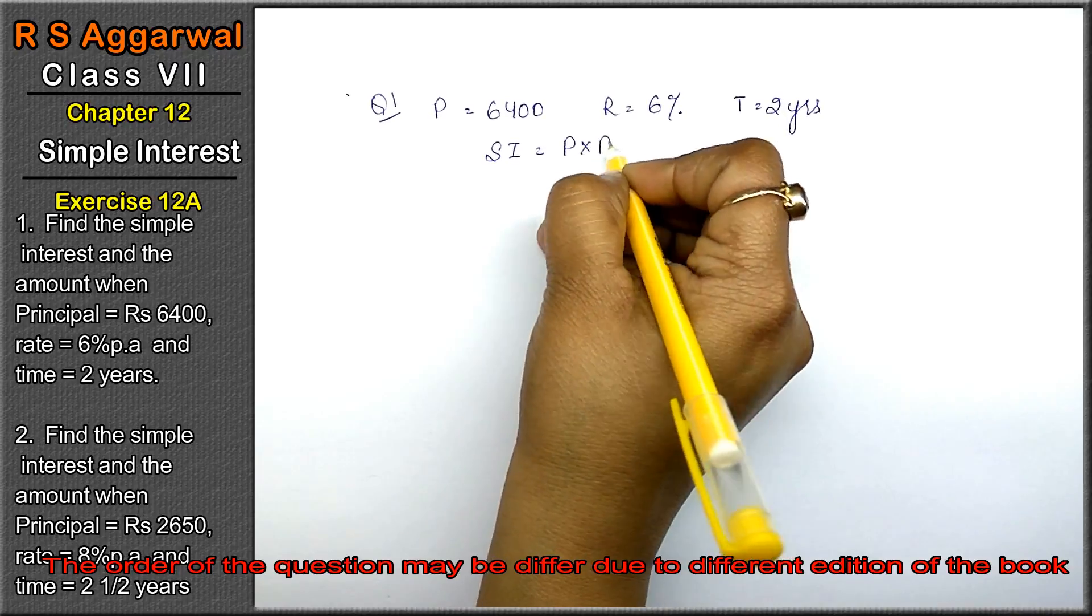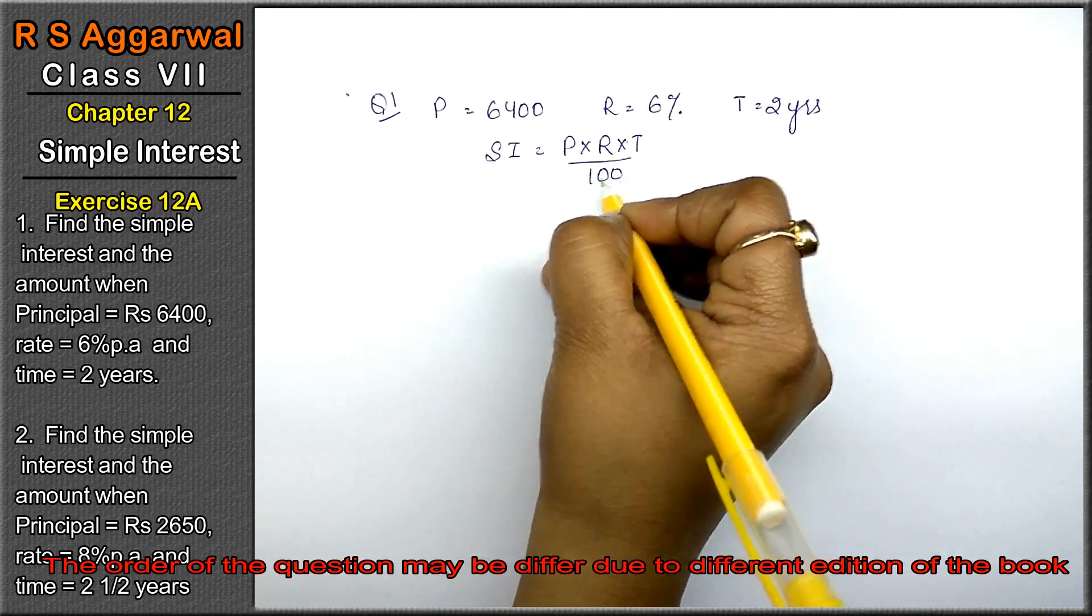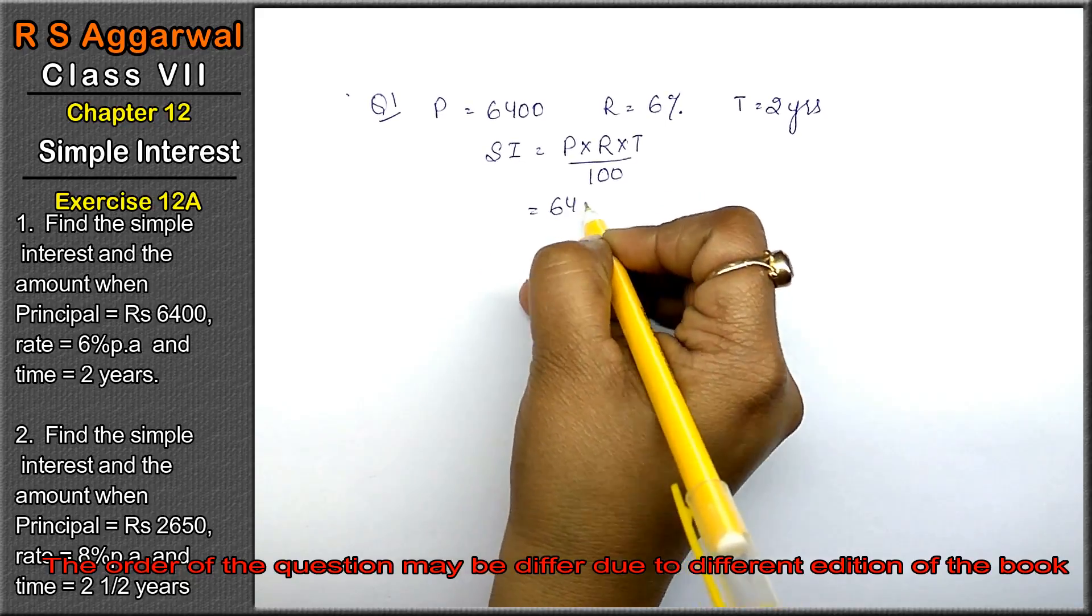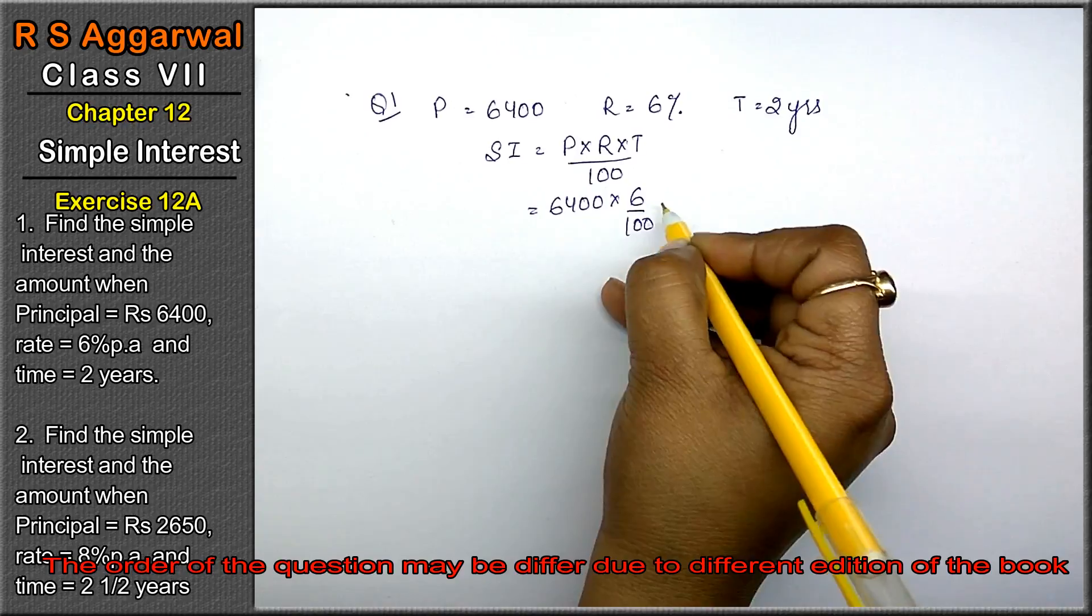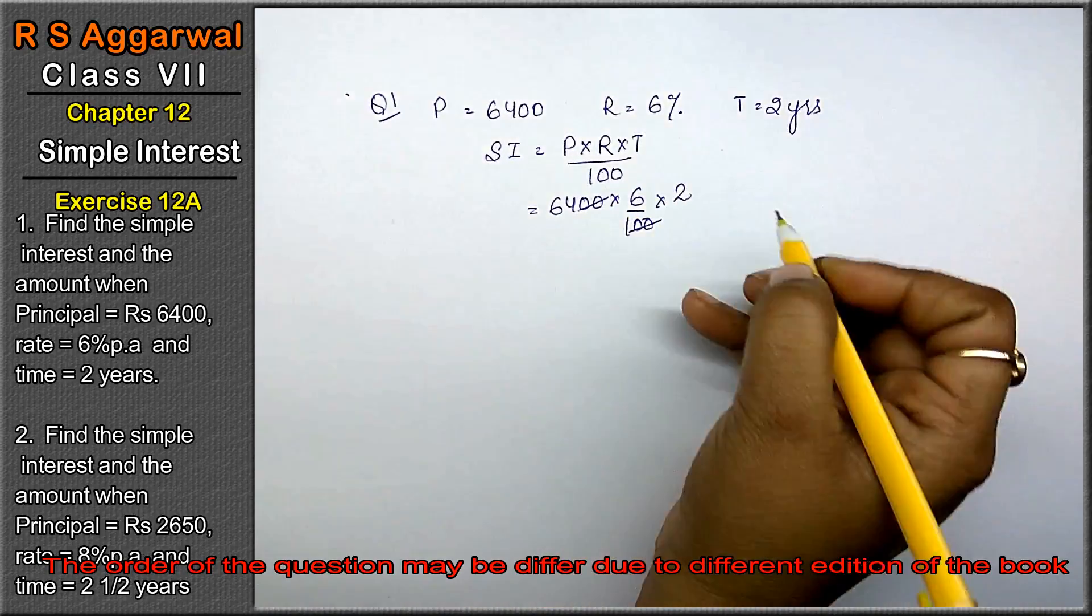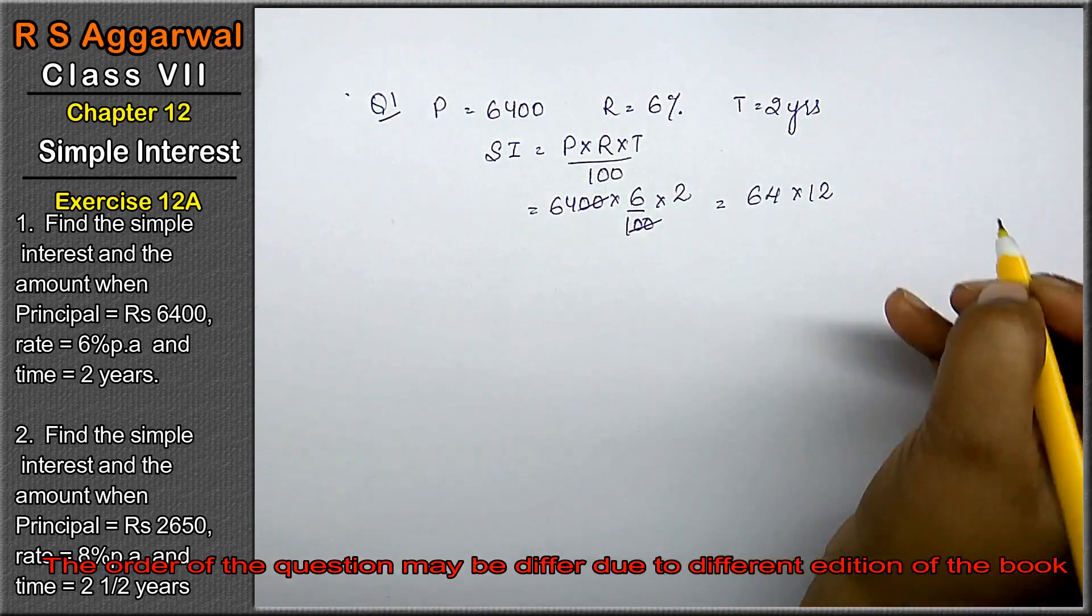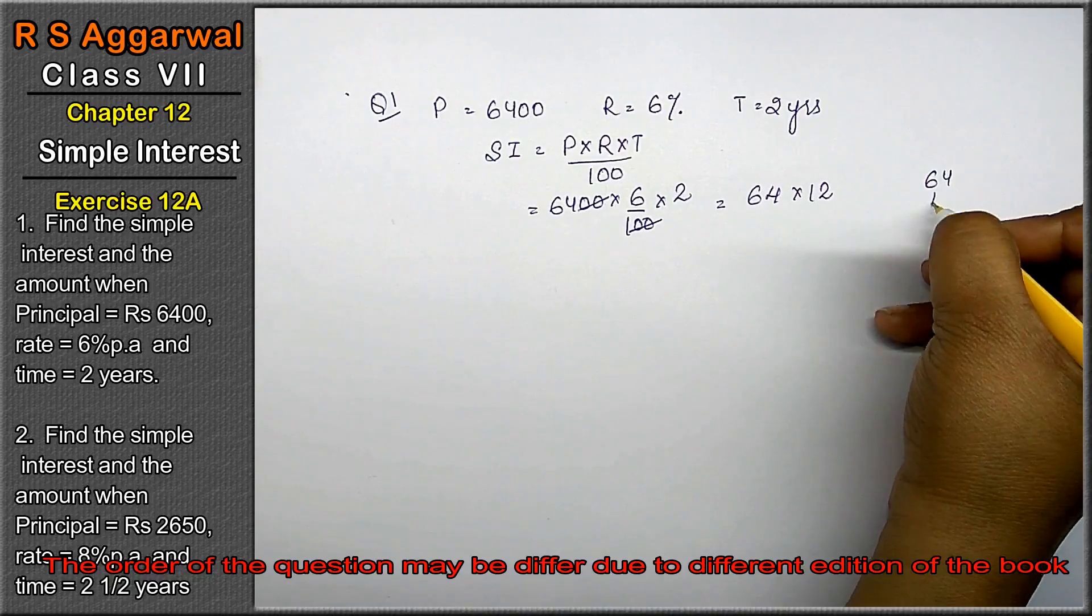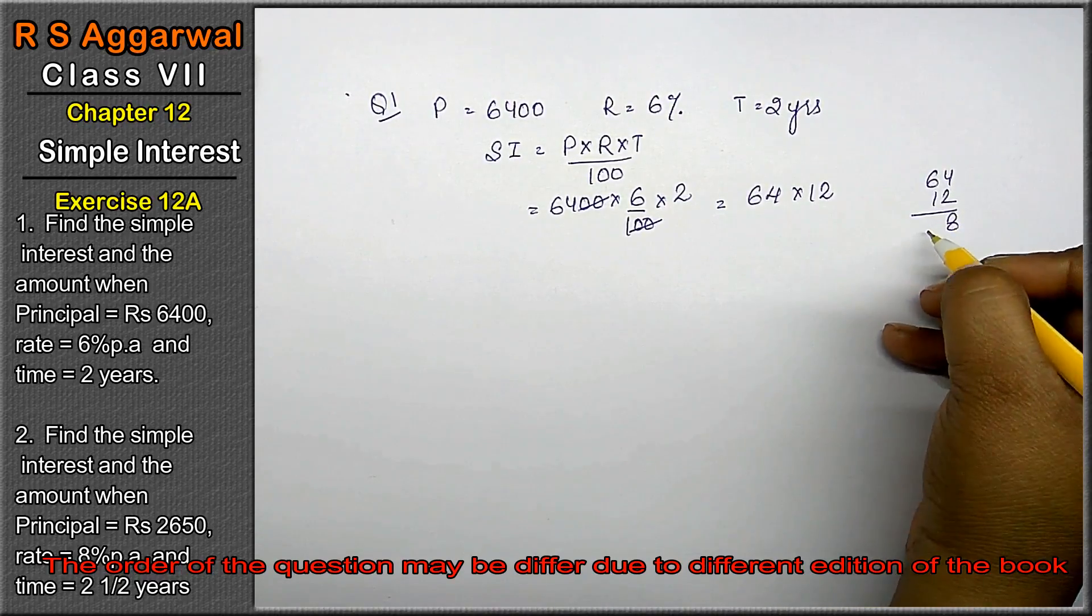Friends, we need to find simple interest. Simple interest ka formula hota hai P into R into T upon 100. P is given to us 6400, R is 6%, and T is 2 years. Two zeros and two zeros cancel. This becomes 64 into 6.